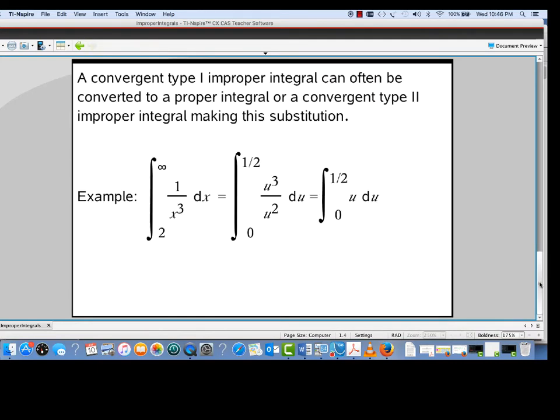you will end up converting it into either a proper integral, or possibly a type 2 improper integral. And we've just seen that as long as it converges, the calculator does a pretty decent job with convergent type 2 improper integrals. So here's an example that shows that substitution idea at play.